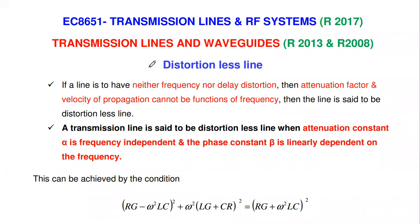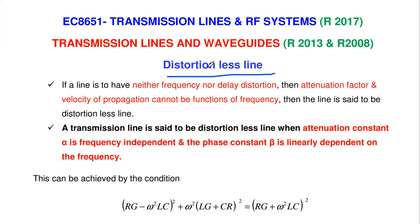Welcome to my channel. In this video we are going to discuss the distortion-less line from the subject Transmission Lines and RF Systems. In the previous video we discussed the two types of waveform distortion happening in a transmission line: frequency distortion and phase distortion. Distortion means the received signal does not have the exact shape of the transmitted signal.